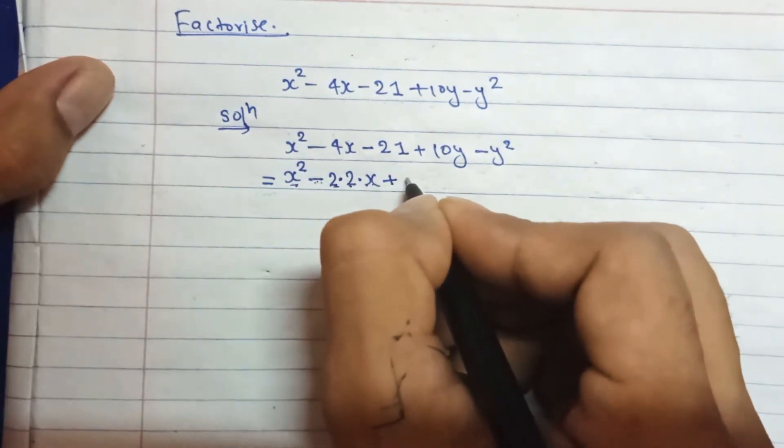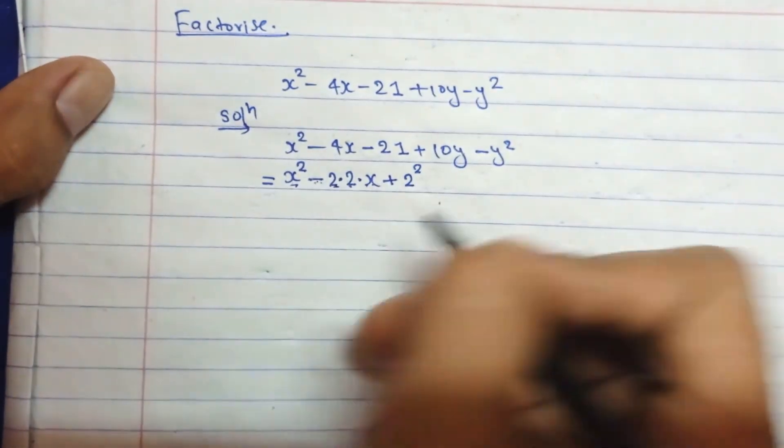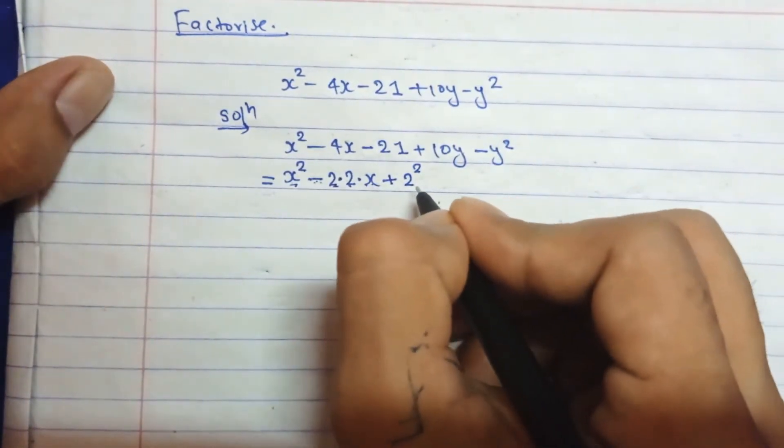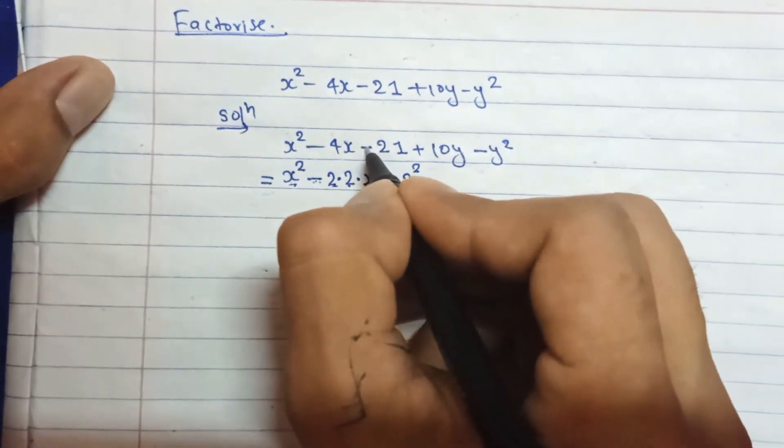So that we can write here b², a² - 2ab + b². And in the similar way, 2² is 4, but we have here -21.